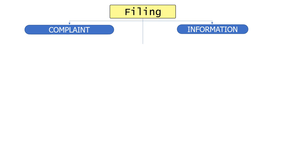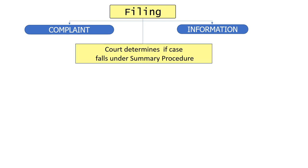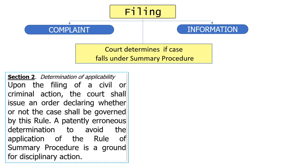After the filing of the complaint or information, the next step is for the court to determine if the case falls under summary procedure. That is very clear. According to Section 2, upon the filing of a criminal action, the court shall issue an order declaring whether or not the case shall be governed by the rule on summary procedure.